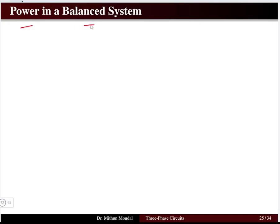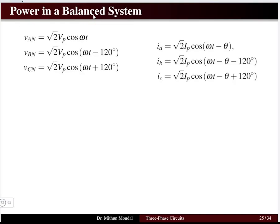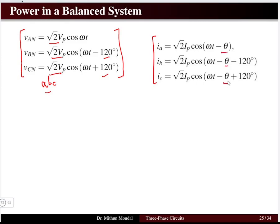A balanced system is one where all three phases have equal magnitude but different phases for the source, and equal phase for the load. With the ABC sequence, the voltages of each phase can be written with equal amplitude and phase differences of 0, -120, and +120 degrees. The current in each phase — Ia, Ib, and Ic — will lag the voltage, considering the load to be lagging in nature, with some angle theta as the lagging load condition.